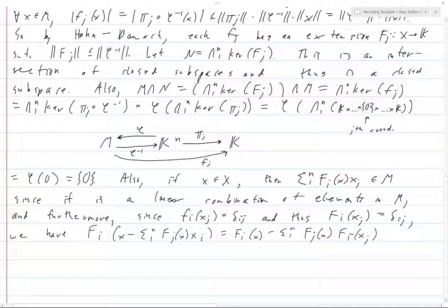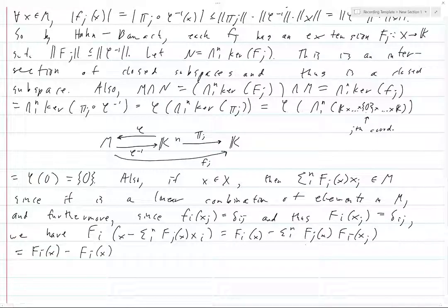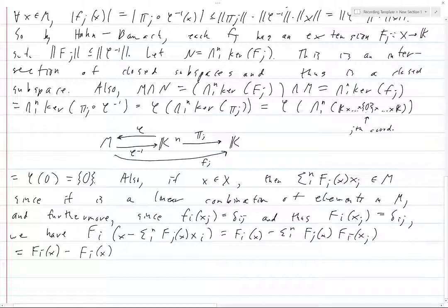What do we just say about these? This is δᵢⱼ, so what's going to live? The only thing that's going to live here is when i equals j. And we're summing over, wait a minute, Fⱼ(x), right? So we're going to sum the Fⱼ(x)'s, Fᵢ(x), Fᵢ(xᵢ). So the only thing here that's going to survive is the i term, where this is going to give you 1, and then this is going to give you Fᵢ(x). So this is equal to this, and this is zero.